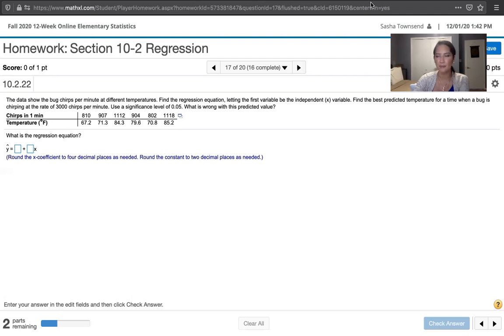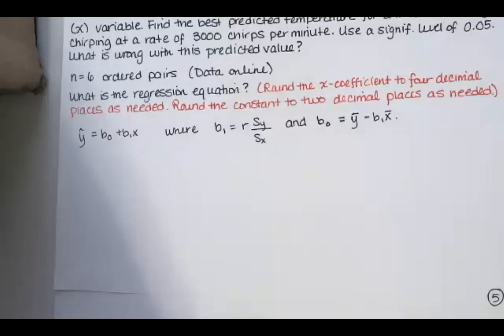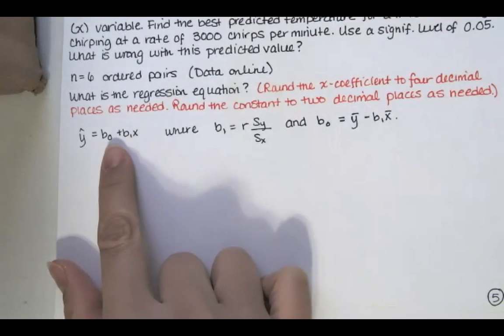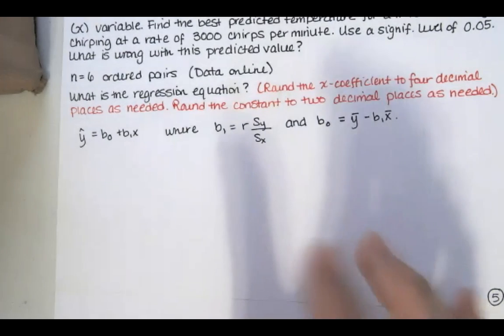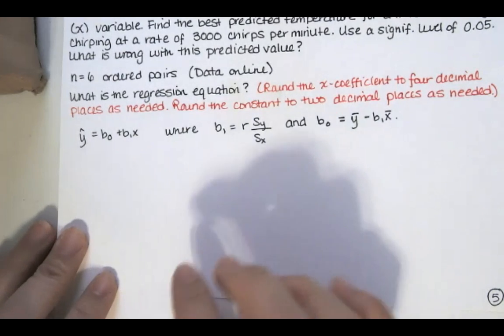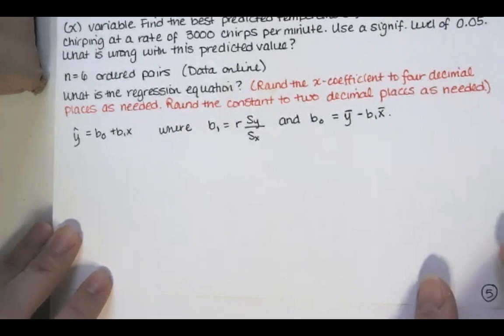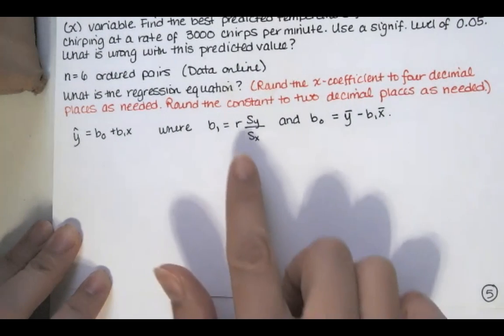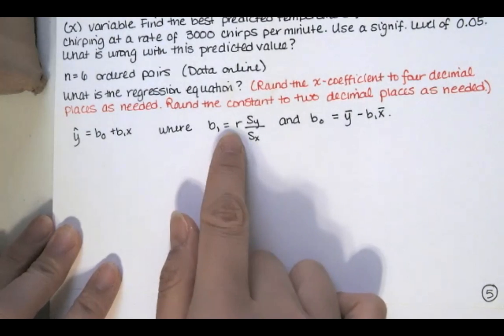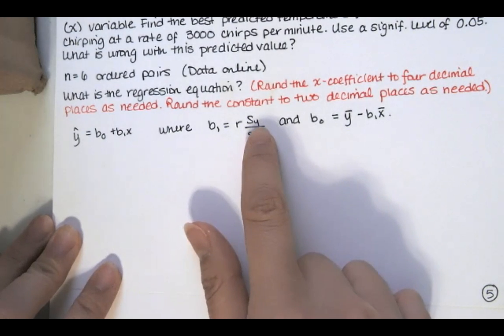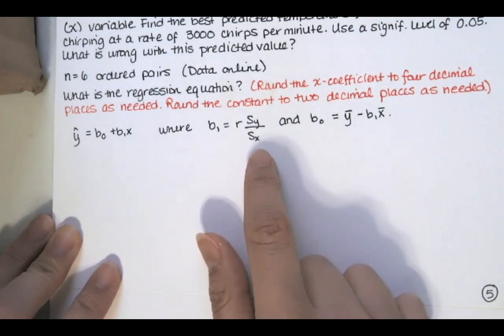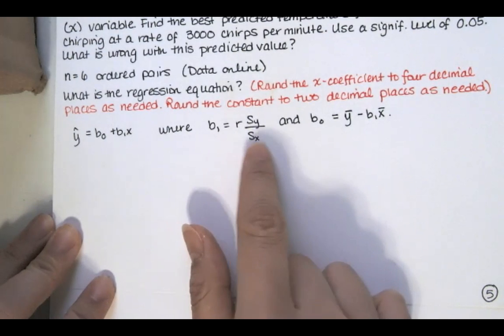So y hat is equal to b sub 0 plus b sub 1 times x, and there are a couple of different formulas that we could use, but I think that if we're using technology, the easiest ones to use are these two formulas. So we can find the Pearson correlation coefficient r for our data, and then we'll find the sample standard deviation for the y values and the sample standard deviation for the x values using Excel.